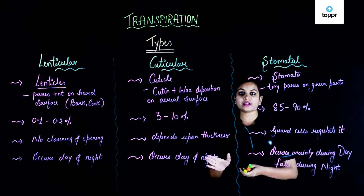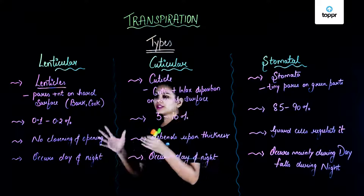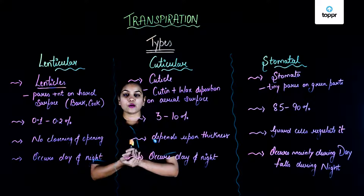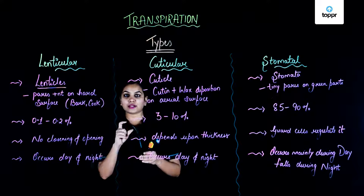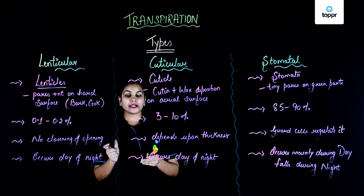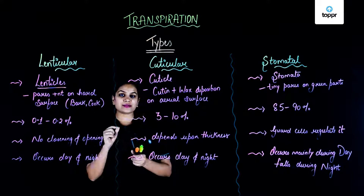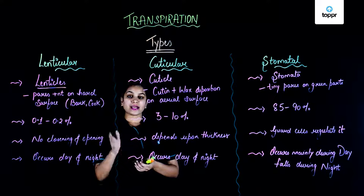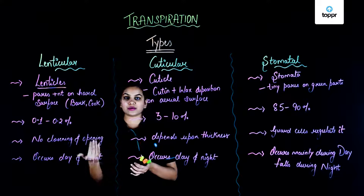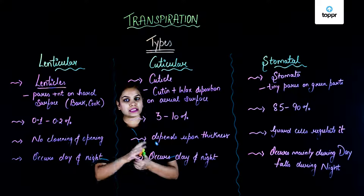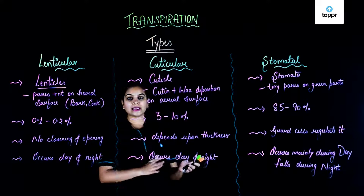Cuticular transpiration depends very much on the thickness of the cuticle. In desert plants — xerophytes — they have a thick cuticle, which reduces the rate of transpiration significantly. In hydrophytes, the cuticle is thinner and hence the rate of transpiration can be more. Like lenticular transpiration, cuticular transpiration also has no guard cells, so it can occur day and night.